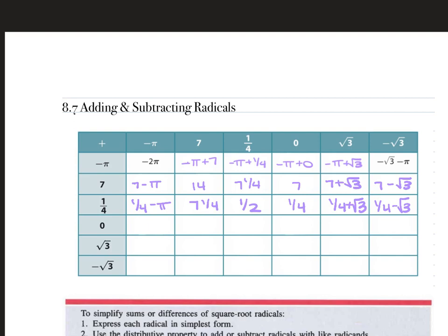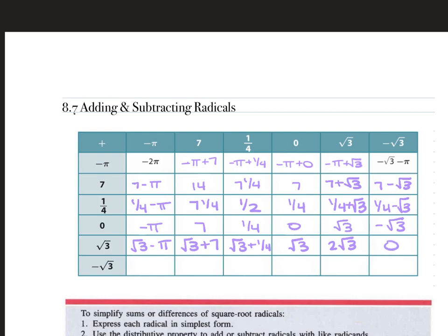For 0: 0 minus pi is negative pi. Then we have 7, one-fourth, 0, the square root of 3, and the negative square root of 3. For the square root of 3: square root of 3 minus pi. Square root of 3 plus 7. Square root of 3 plus one-fourth. Just the square root of 3. Square root of 3 plus square root of 3 is 2 square root of 3. And square root of 3 minus square root of 3 is 0.